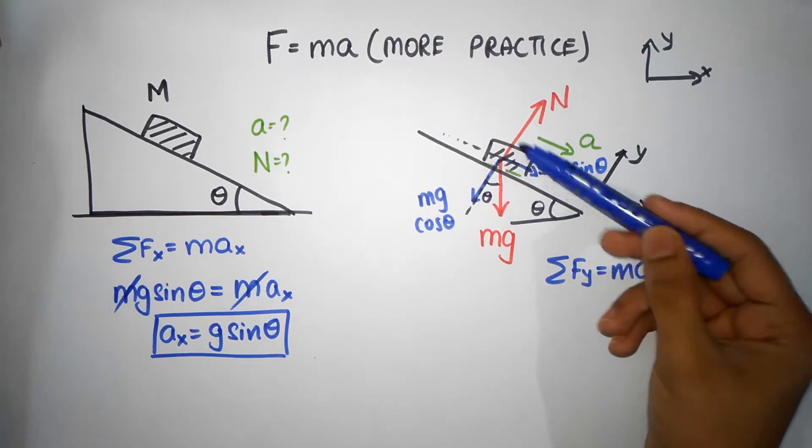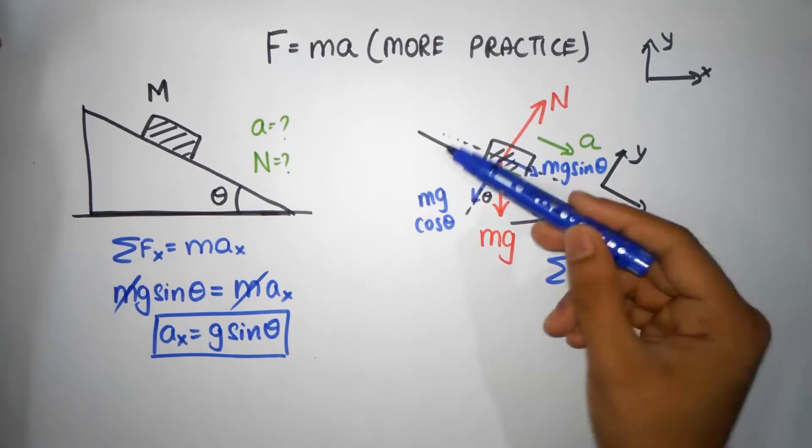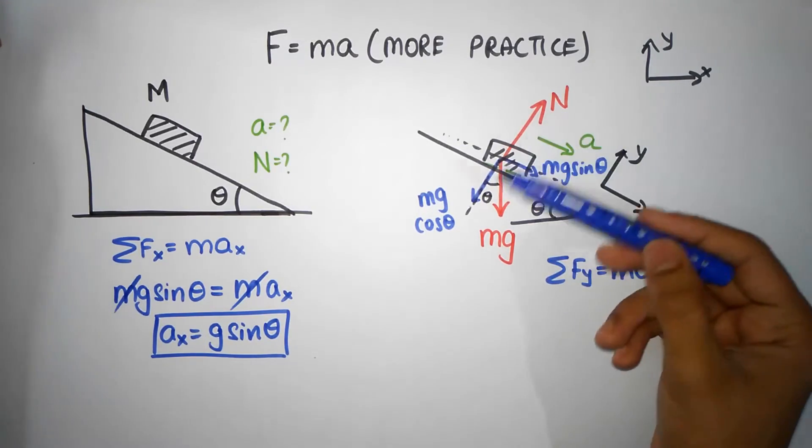And remember, normal force will always try to counter mg cos theta. It will always try. Normal force is like a self-adjustable force. It will adjust itself according to how much force this mass is going to put on the surface. Okay, so it's always going to try and counter it.